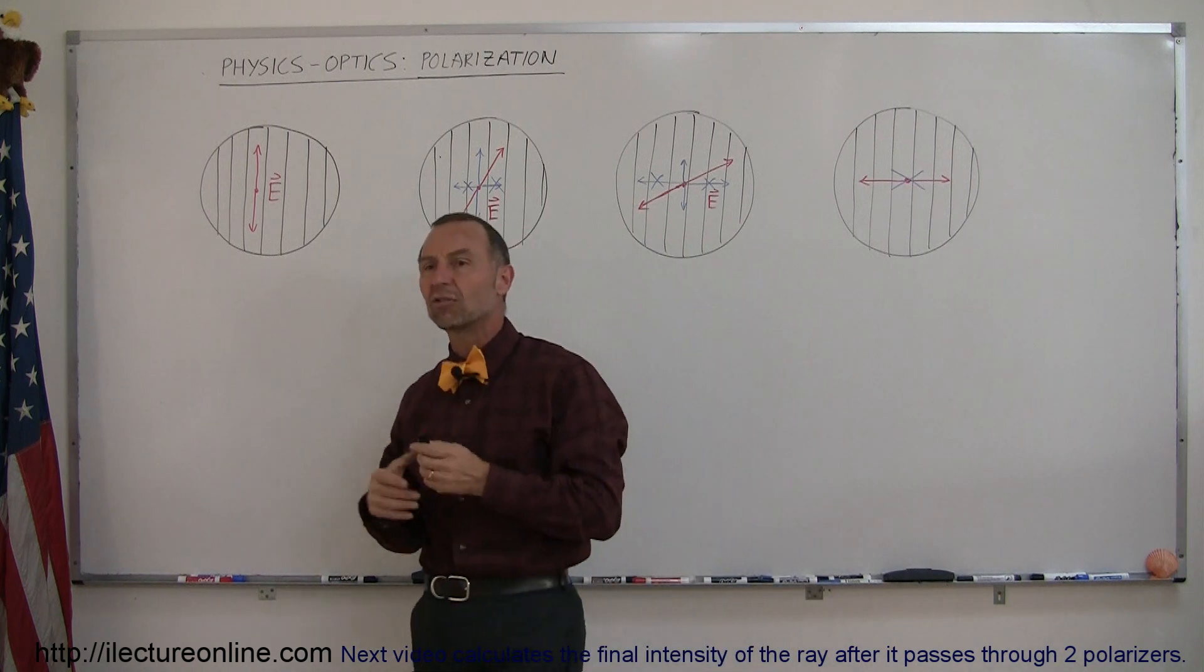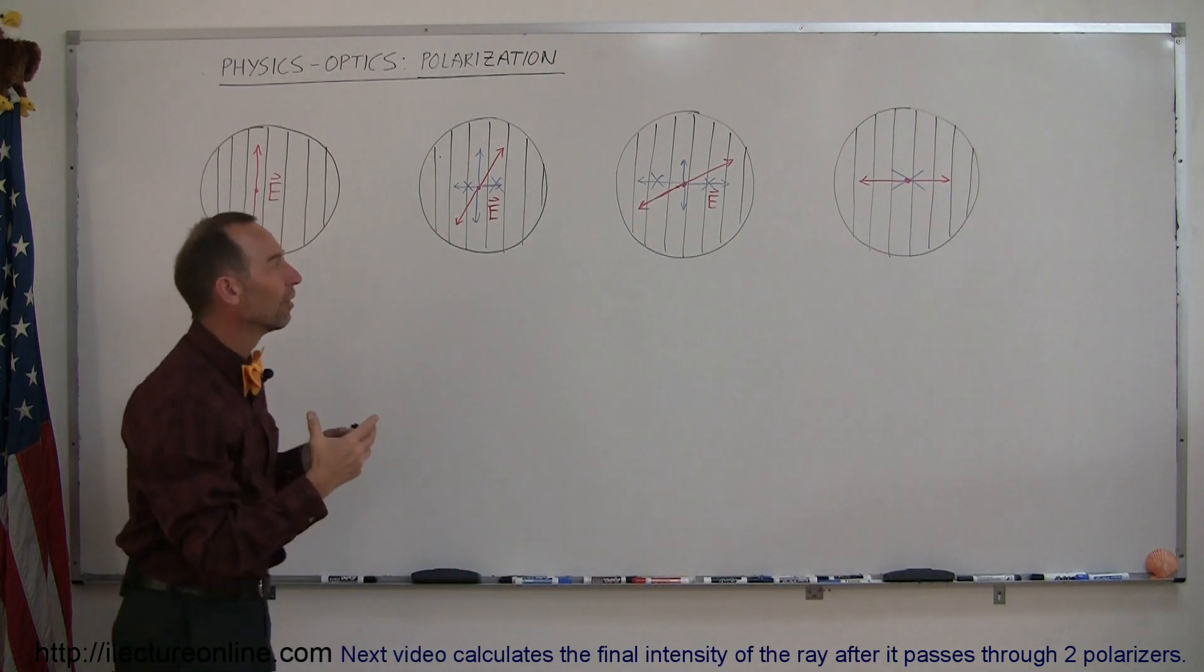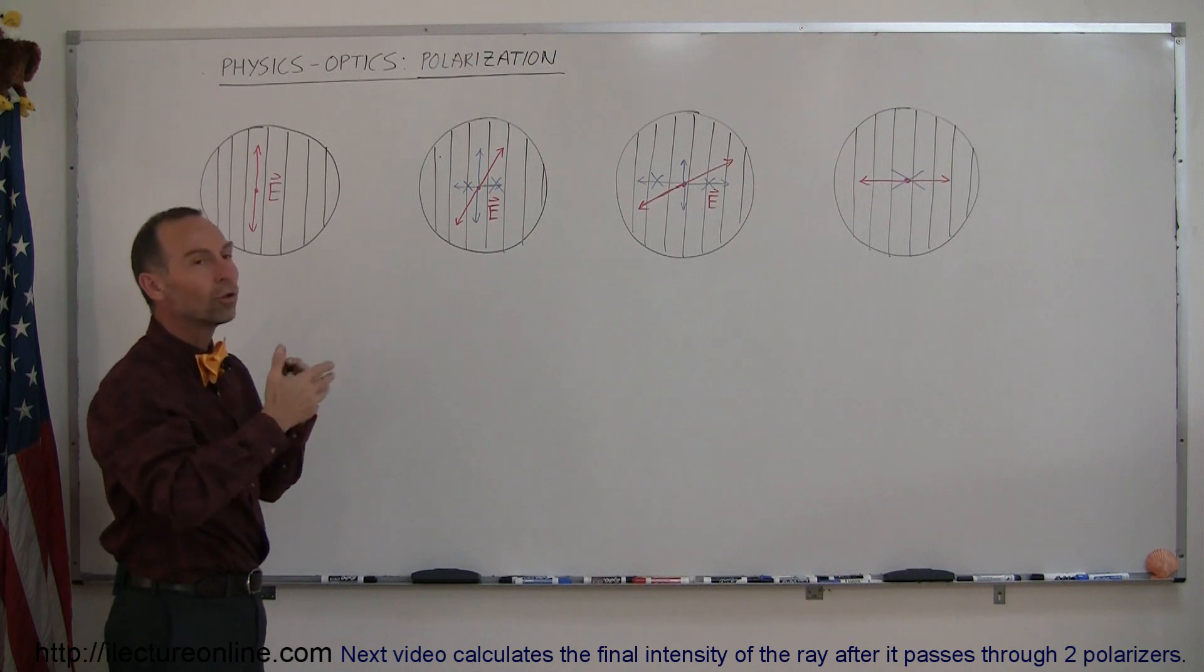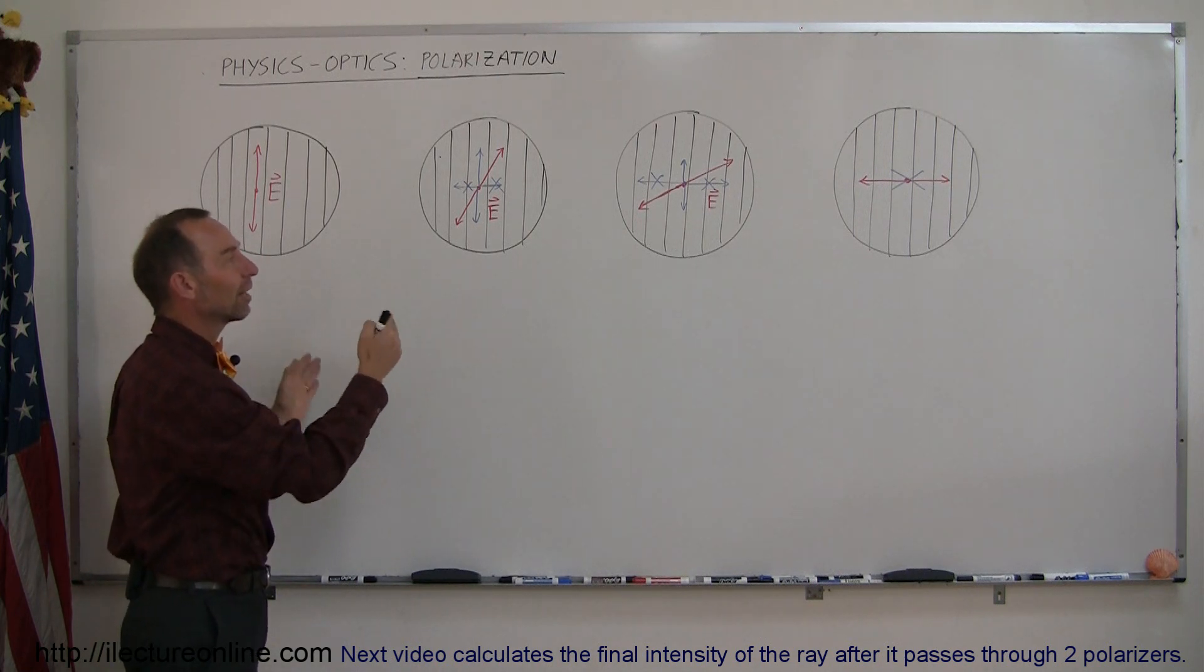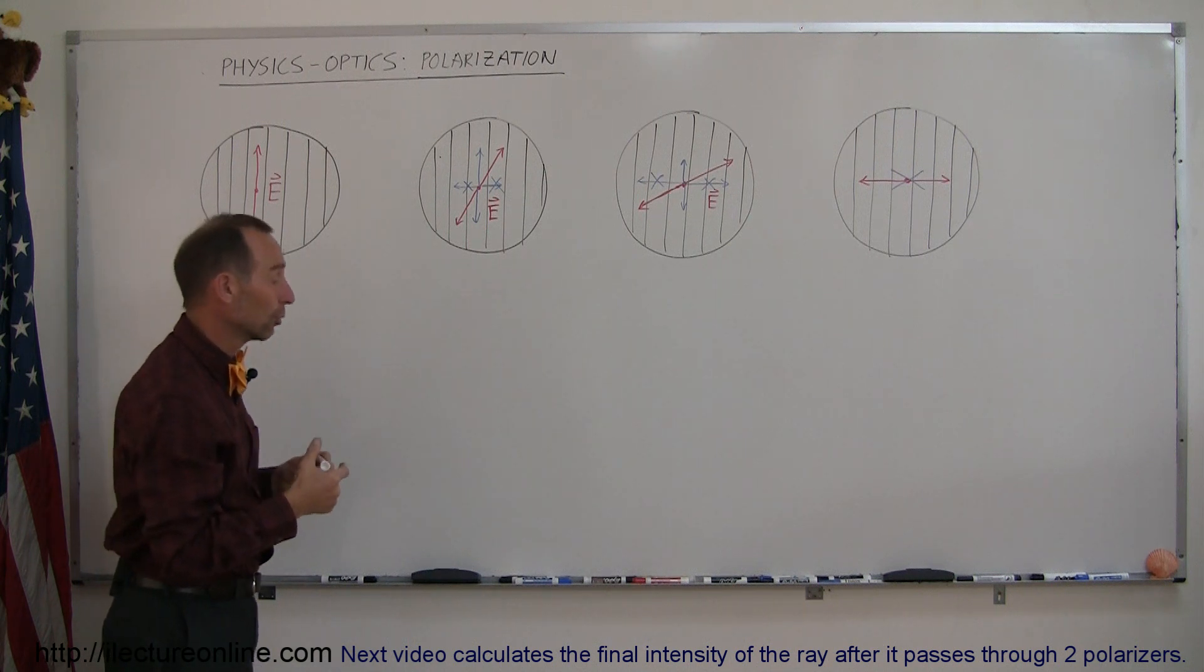Now, since electromagnetic radiation is typically a combination of oscillations in all the various directions, you can see that on average, half of the light will get through and the other half of the light will not get through.